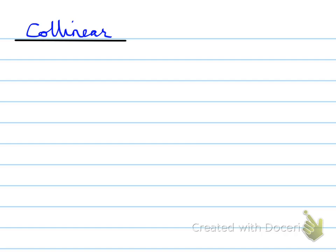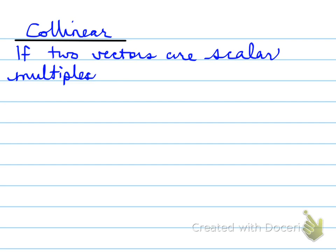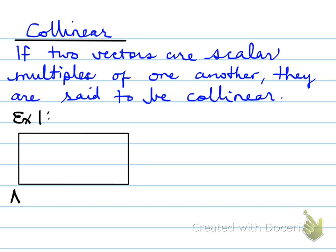Let's look at collinear. What does collinear mean? If two vectors are scalar multiples of one another, they are said to be collinear.